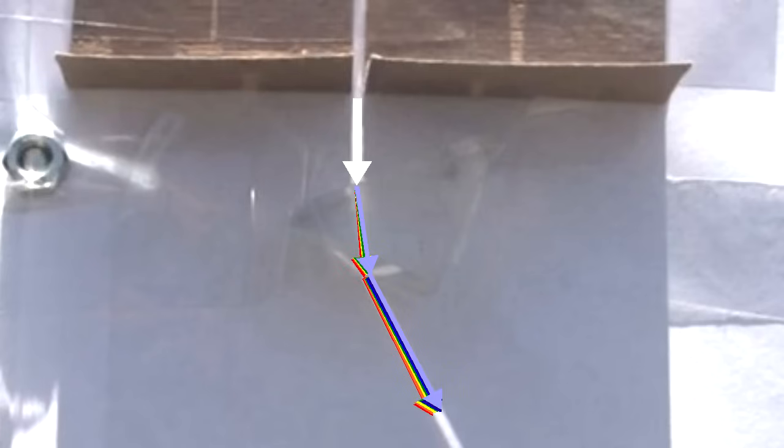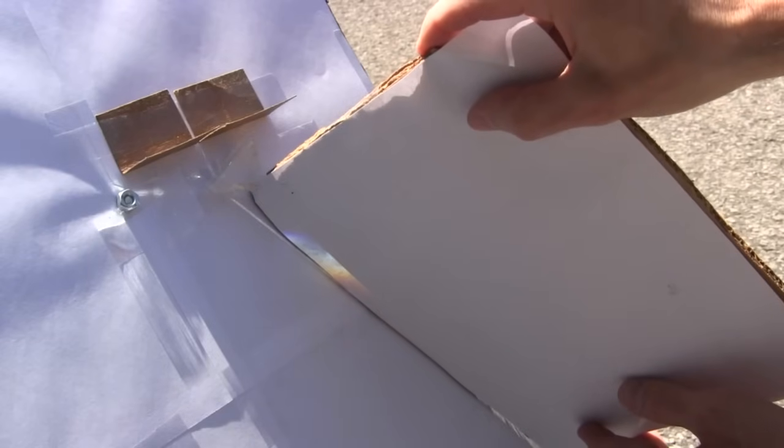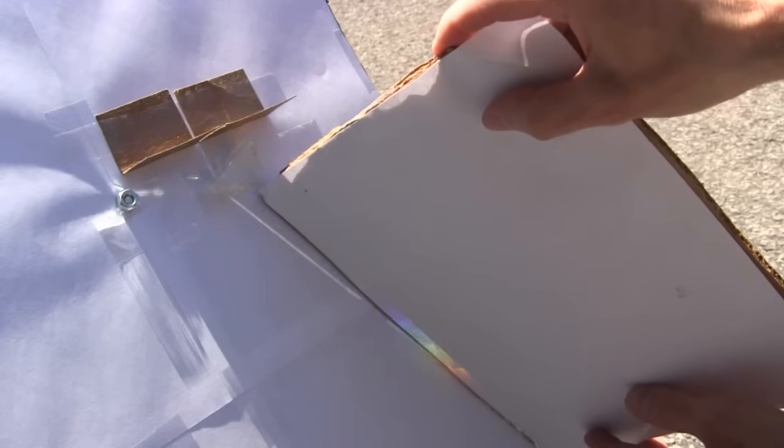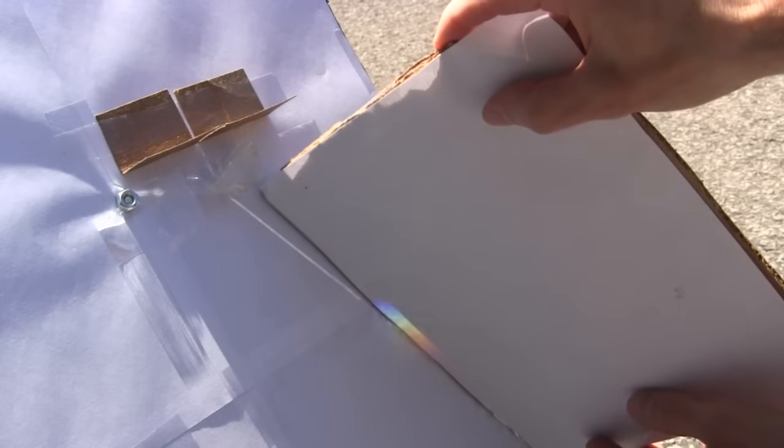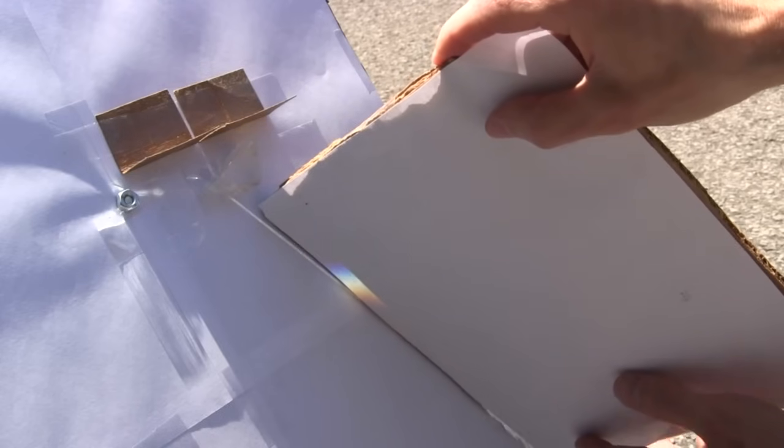So they enter going in the same direction, but leave going in different directions. And when we put this paper in the way of the light, we see the different colors separated. Putting the paper on a slant helps spread the light across more area, so we can see the colors more clearly. And that's how a prism works, to make a rainbow of colors.